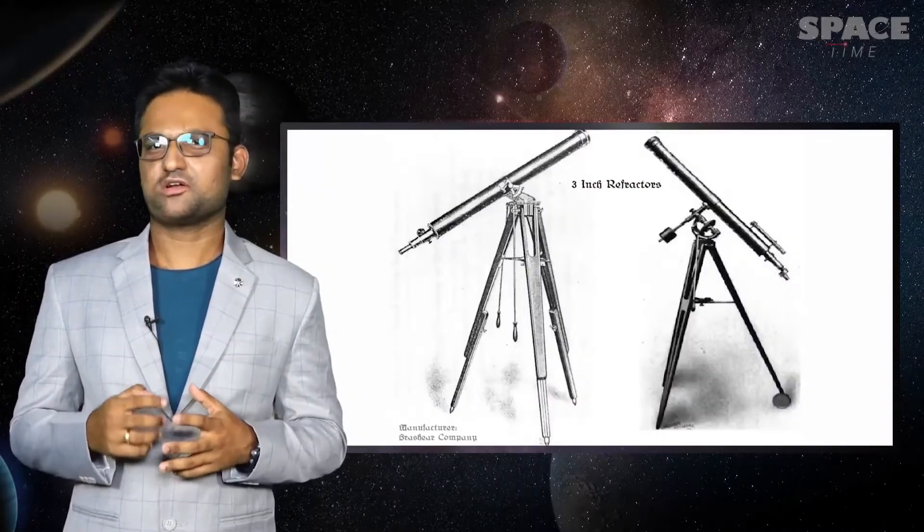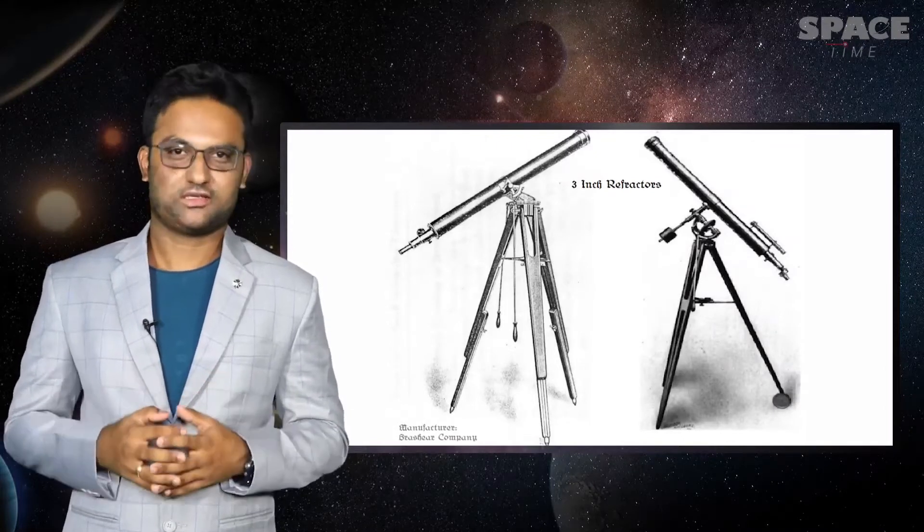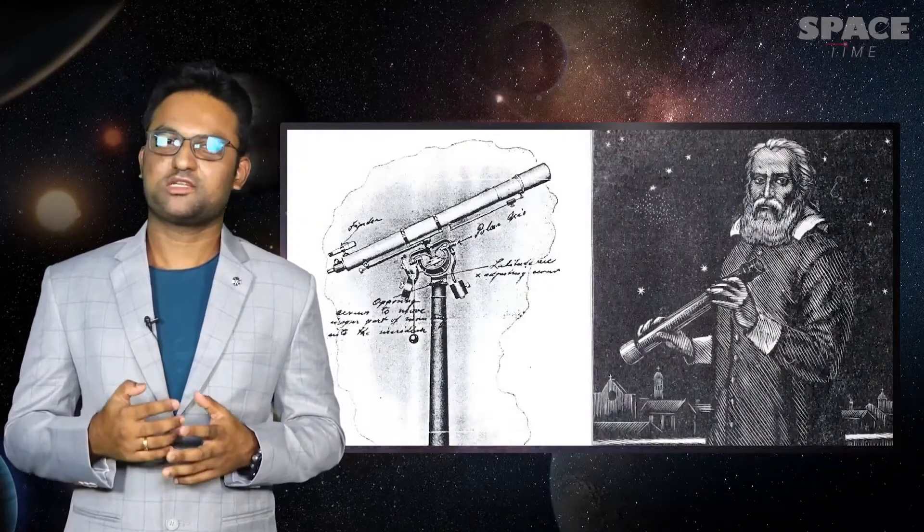It was likely a small refractor telescope of 2 to 3 inches in aperture, similar to the type Galileo used.